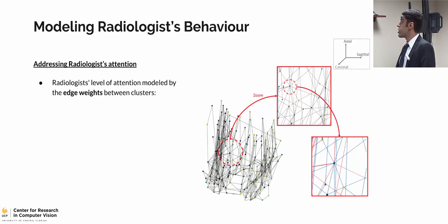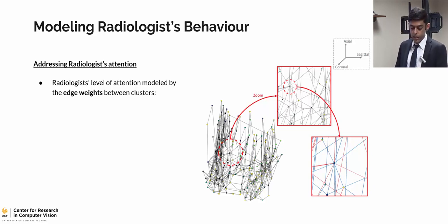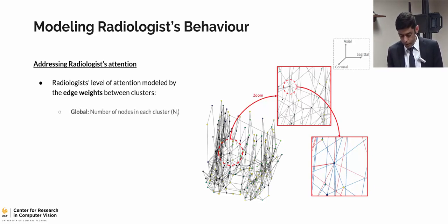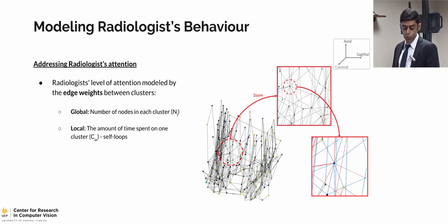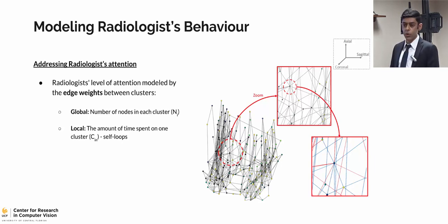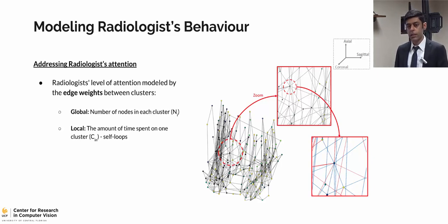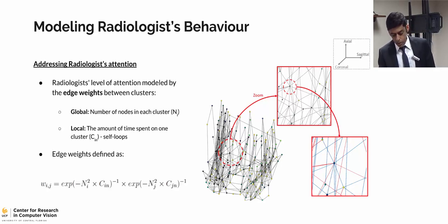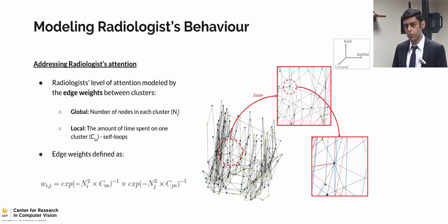To model the radiologist's attention and behavior, we propose to model this into the weights of our graph and then perform sparsification based on those weights, so we incorporate the radiologist's attention into our formulation. The level of attention for each node can be modeled by two parameters: a global parameter — the number of nodes in each cluster — and a local parameter — the number of self-loops, modeling the consecutive time spent in a region. We believe these two parameters model two different behaviors: one is consecutively examining a region, and the other is returning to a region again.